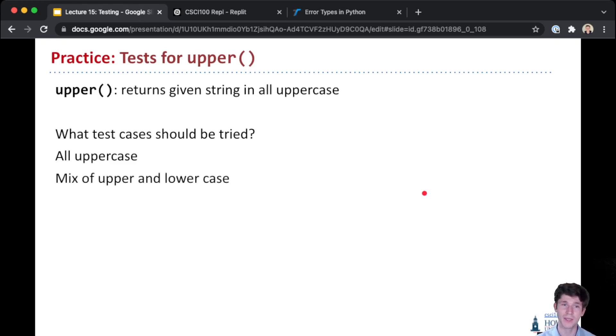Maybe we want to make sure that it works for a mix. So any kind of mix—we don't have to try capital A, lowercase B, capital C, and then capital A, capital B, lowercase C. One single string that is a mix of upper and lowercase is enough for us to probably believe that our function works for that whole class of input.